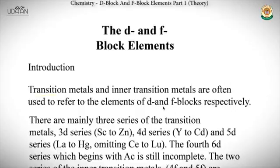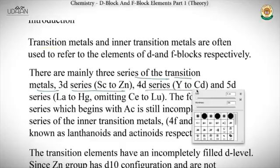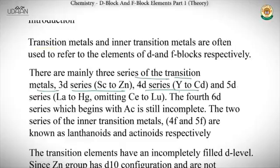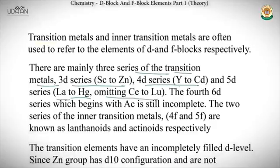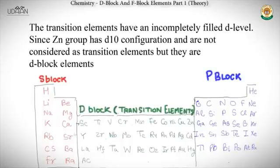There are mainly three series of the transition metals: the 3d series which goes from Sc to Zn, the 4d series which goes from Y to Cd, and the 5d series which goes from La to Hg (omitting Ce to Lu). These can be identified on the periodic table.